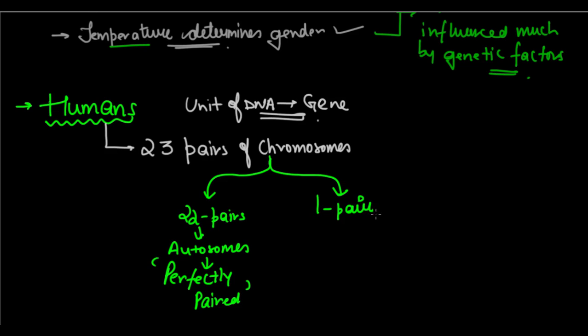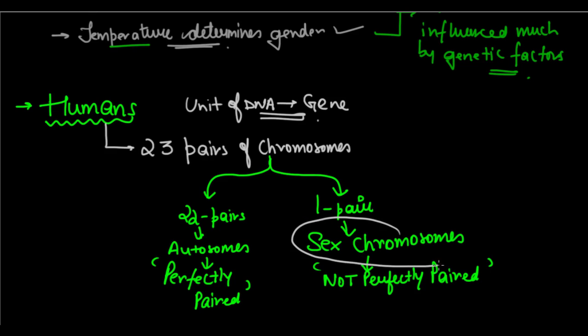But there is one pair specifically, which is called the sex chromosome pair, or simply the sex chromosomes. And the problem with that, and the special thing of these chromosomes is that they are not perfectly paired. Not always perfectly paired. There are some exceptions to this group. And this is what we need to focus on today, the sex chromosomes.